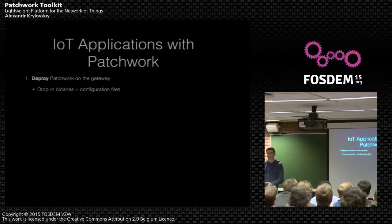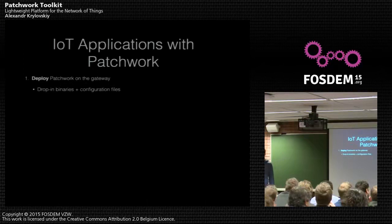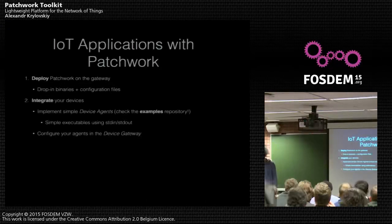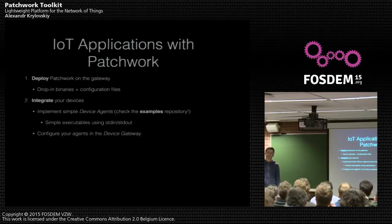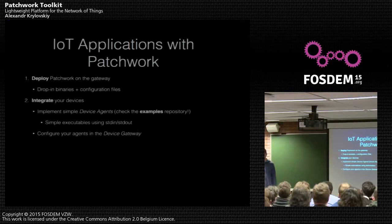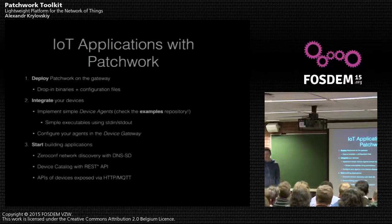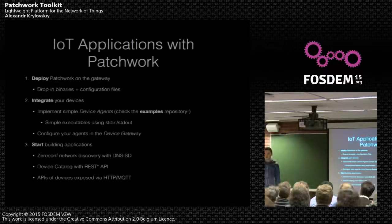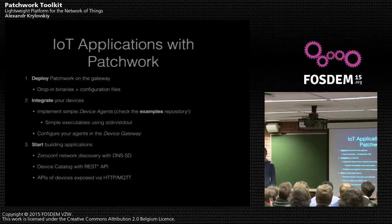So how do you build an application with Patchwork? The first step is to assemble your devices and communicate with them locally. Then you drop the Patchwork binary in there and do some basic configuration. You implement a simple device agent - a simple executable that communicates with your device through GPIO or some other way - and configure these device agents with Patchwork. You start the gateway, and once started, you get zero-conf network discovery via DNS-SD. On a local network, you can discover that there is a device gateway with specific devices connected to it. There's a REST API with a device catalog on every gateway, or you can run a global catalog on the network, and you get HTTP or MQTT depending on your configuration.